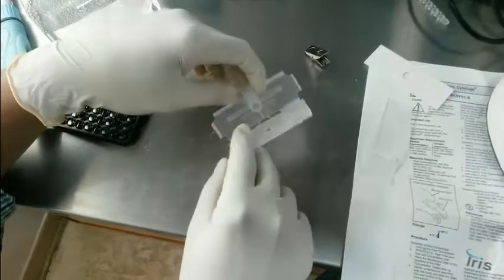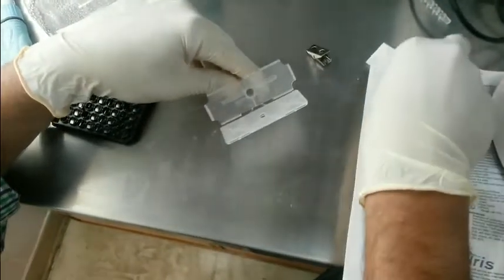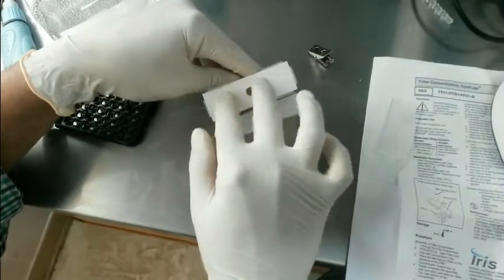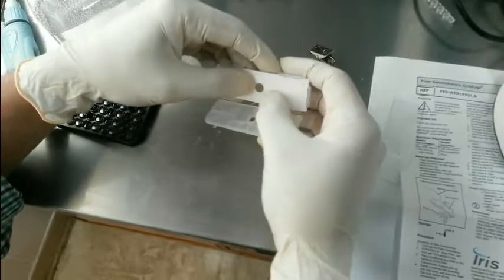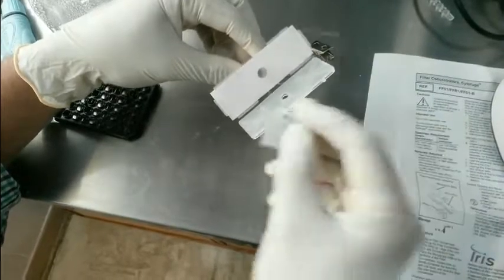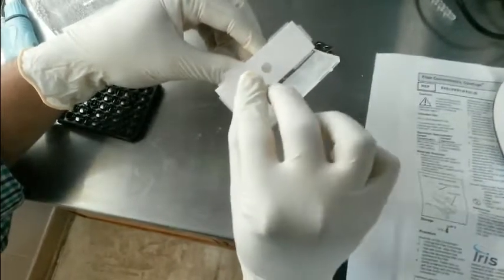So first of all we take the filter concentrator and we fix the filter paper in it just like this, and after that we need to insert our glass slide.